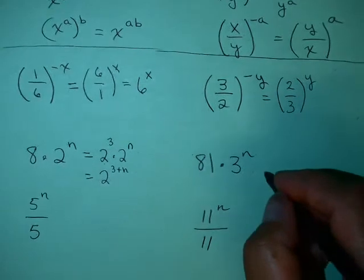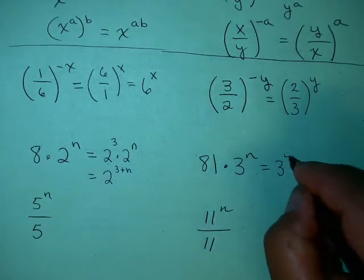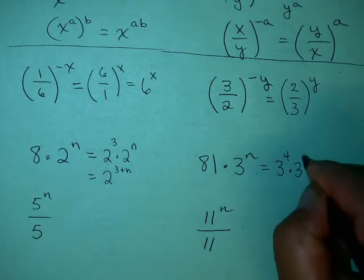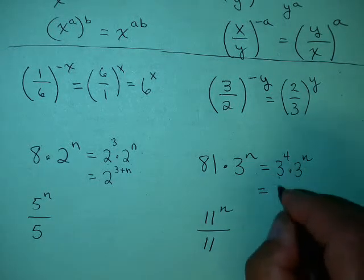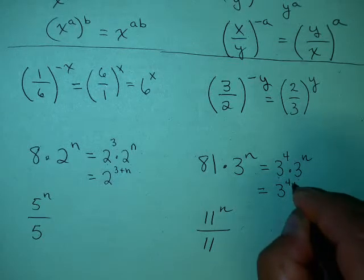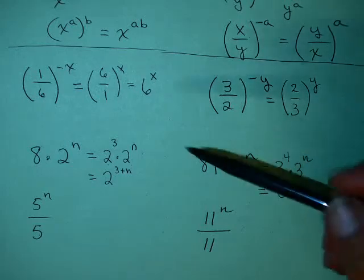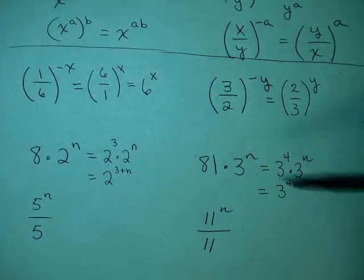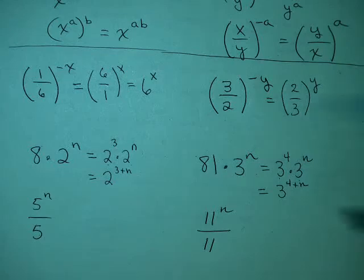81 is a power of 3 — that's 3 to the 4th — times 3 to the n. Since they have the same base, we add the exponents and get 3 to the 4 plus n. You need to pay attention to the directions in the problem. If it says to write in terms of one power, you want to do this. These are equivalent, so both forms are okay, but it depends on what the question is asking.